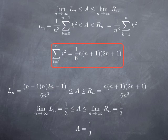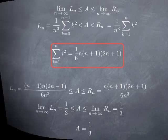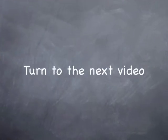It was quite a bit of work to obtain the area under the graph of y equals x squared over the interval 0, 1. In the next video, we're going to try to define the area under the graph of a positive continuous function over a closed interval using a similar process. Thank you.